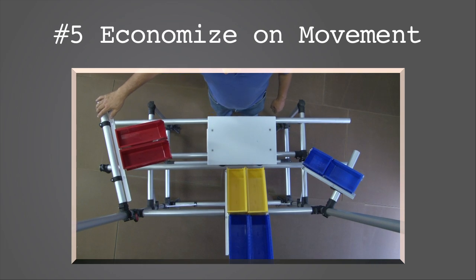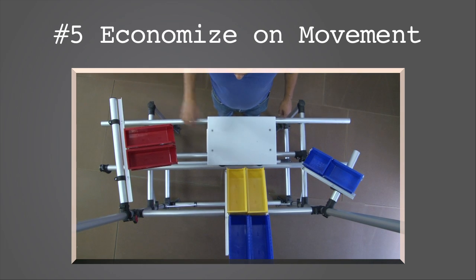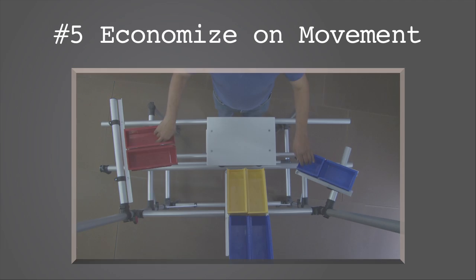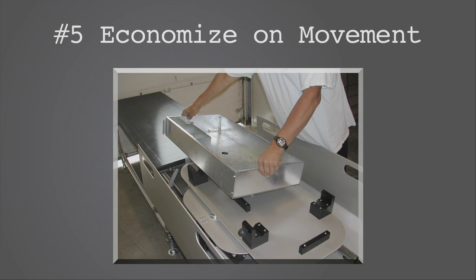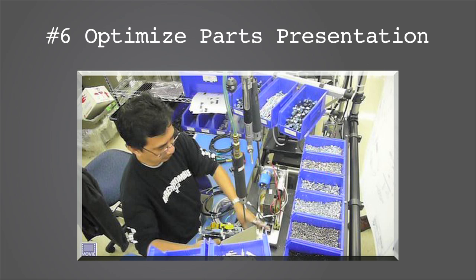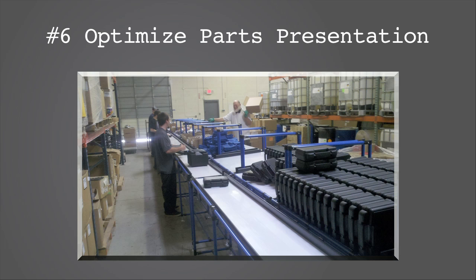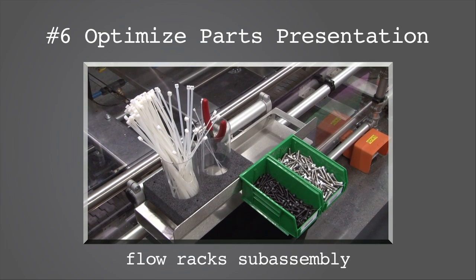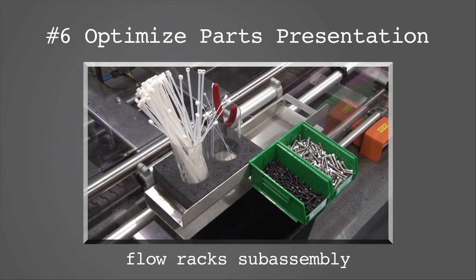Create universal fixturing for mixed model production. Minimize look and reach time — no hyper-extensions. Optimize parts presentation. Are all components at point of use? If there are large or bulky components, are they easily handled? Would customized flow racks be of value? Are sub-assemblies being produced and presented at point of use?